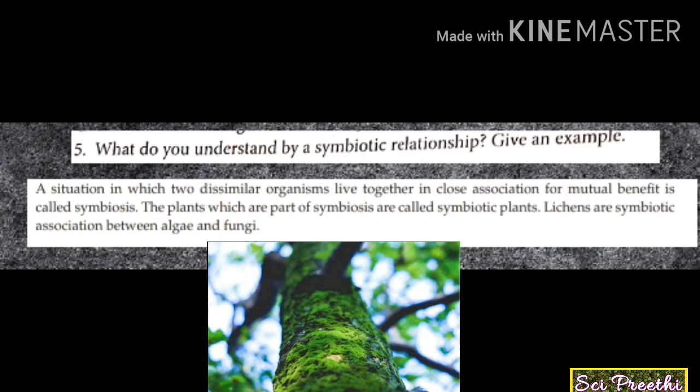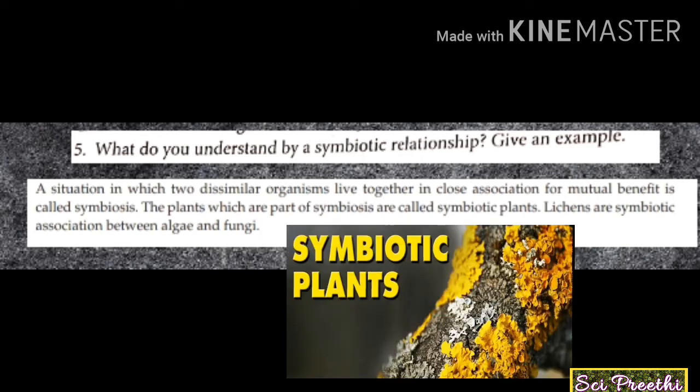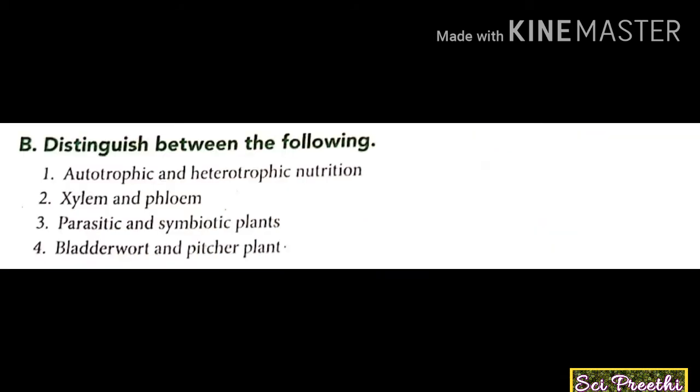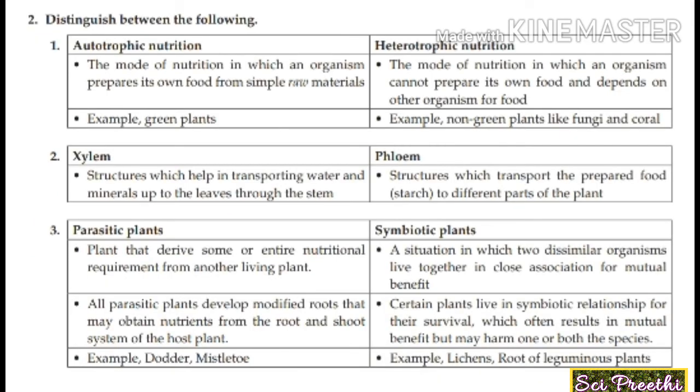Fifth question: what do you understand by a symbiotic relationship? A situation in which two dissimilar organisms live together in close association for mutual benefit is called symbiosis. Plants that are part of symbiosis are called symbiotic plants. Example: lichens, which are an association between algae and fungi.